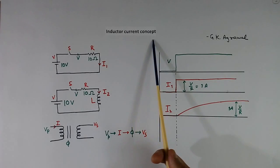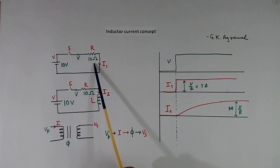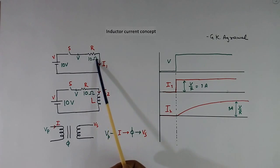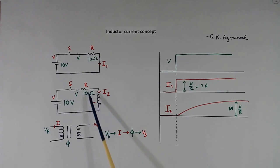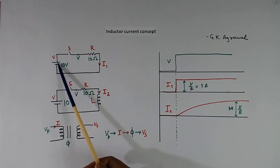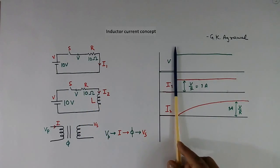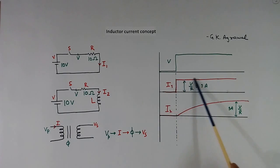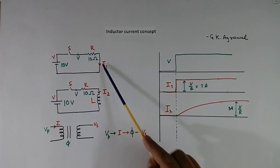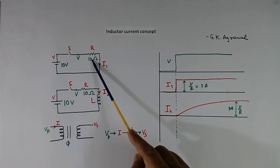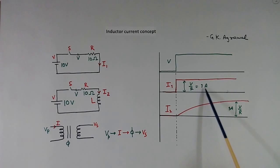Now we come to the inductor current concept. I have shown two circuits. In the first circuit there is only one resistor. When we close the switch, the battery voltage appears and current flows immediately. This current I1 equals voltage divided by resistance. If the voltage is 10V and the resistance is 10 ohm, then 10 divided by 10 gives 1A current.